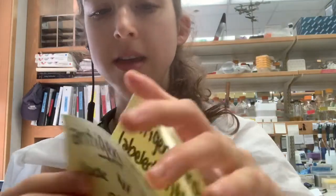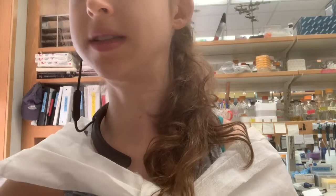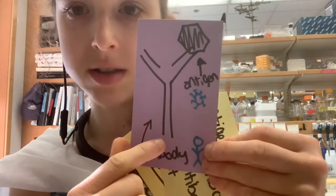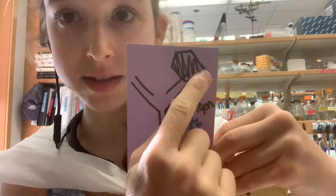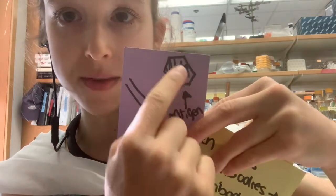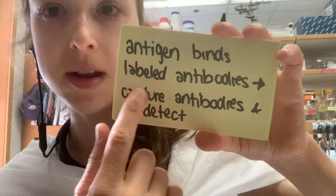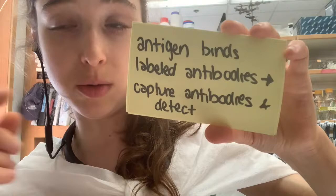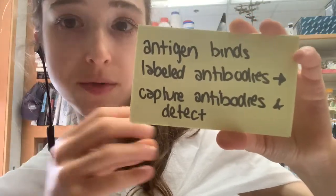Antigen tests look for viral proteins. Going back to our pictures of antibodies — the antigen is the thing the antibody binds to. The viral protein is the antigen here. Antigen tests typically have antibodies that are labeled or part of a detection method. The antigen from the patient sample binds to a labeled antibody, and those antibodies are captured — often on lateral flow strips — and detected in ways similar to what we looked at before. So those are the main types of coronavirus tests.